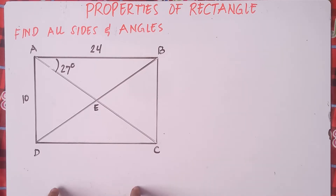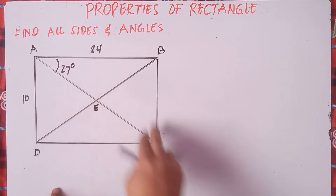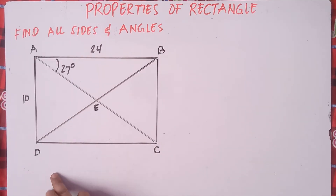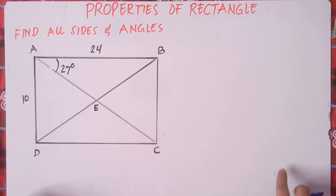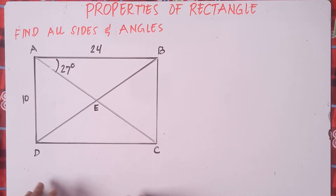So we have an example here, an illustration — rectangle ABCD — and we are told to find the measure of all sides and all angles. So before we solve for the sides and angles, we need to define first what we mean by rectangle.